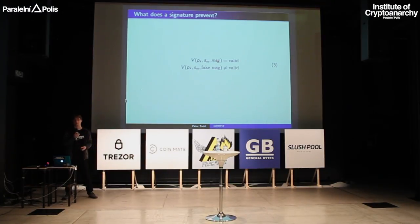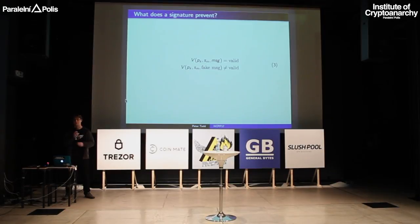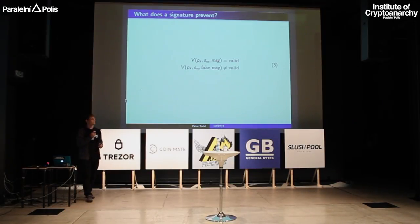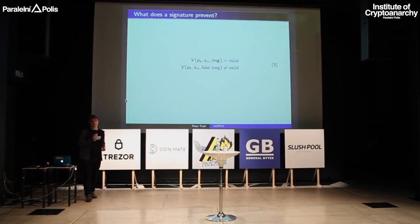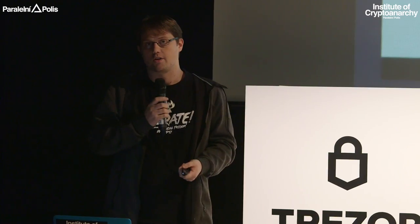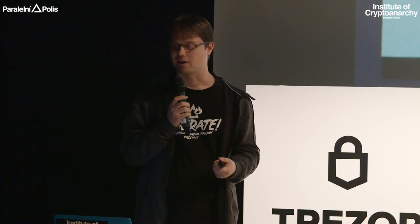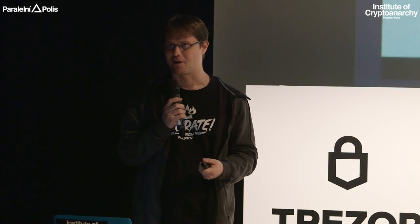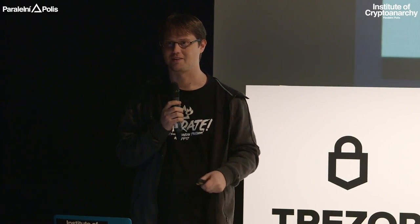So what does it prevent? If I have the right message I'll spit out valid; a fake message isn't valid. The math guys would probably stop there and say we've figured out public key magic — we can now identify people.